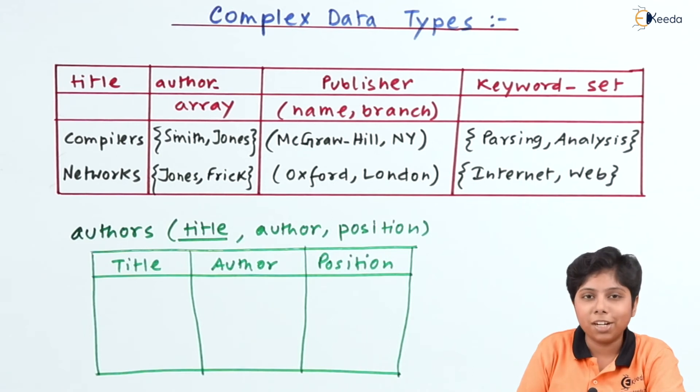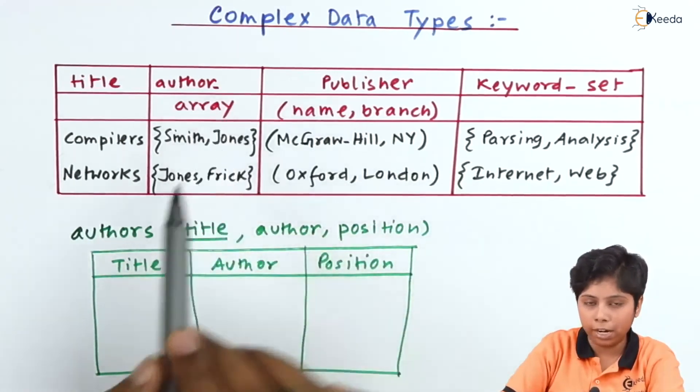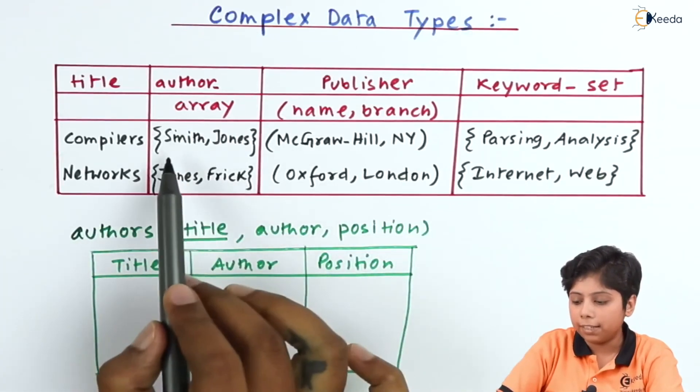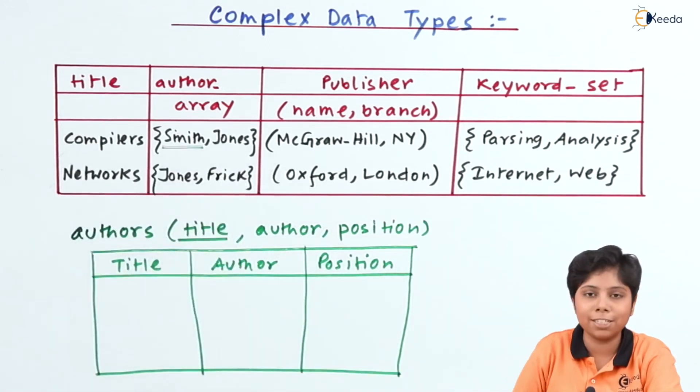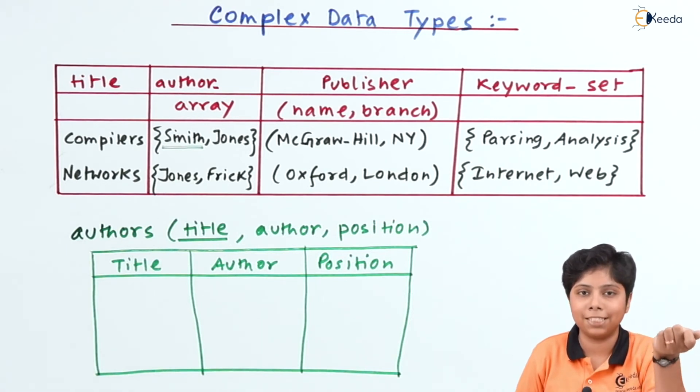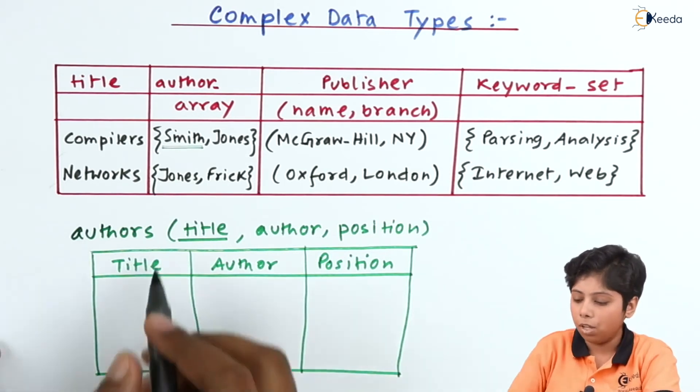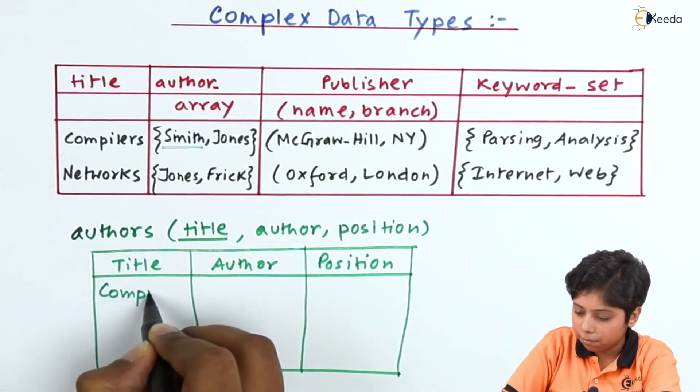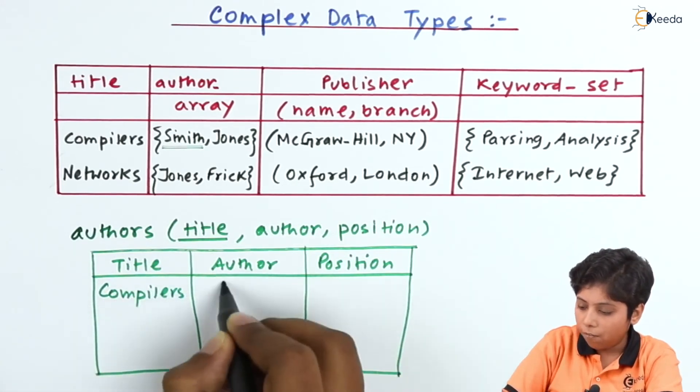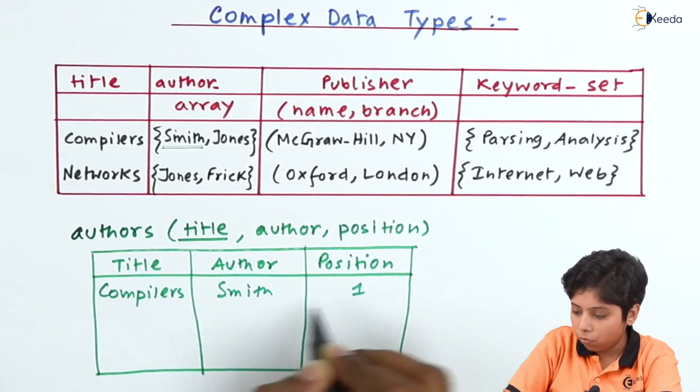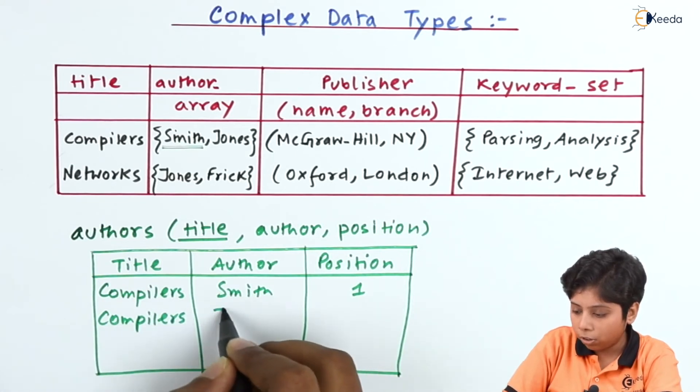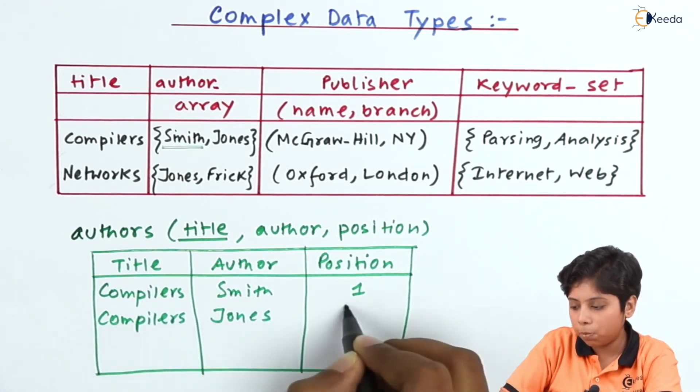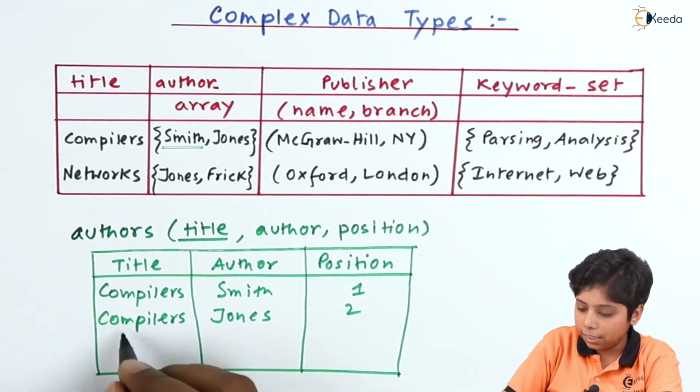So now let us decompose this first relation into other relations so that we can have redundant information reduced from it. The first relation that we can make out of this is the author array. The author will be saying that there will be a position. Smith is in first position for compilers and Jones is in second position. That means who is the initiative writer and followed by the assistant writers.